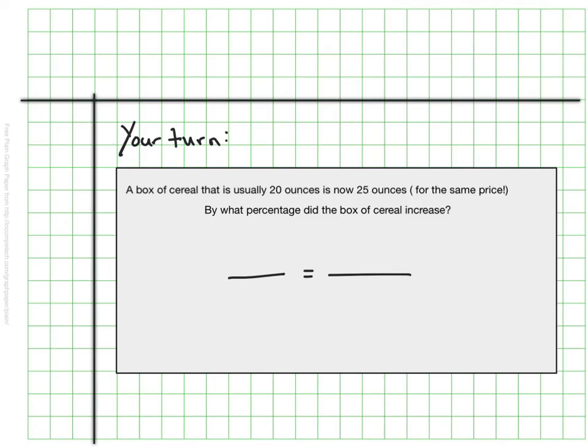This last one, I'll have you try on your own. And it more matches with those images that I shared earlier in the video where a product is being sold with more in it than previously. So this one says a box of cereal that is usually 20 ounces is now 25 ounces. So they've made it a little bit more, but they'll still sell it for the same price, which is great. By what percentage did the box of cereal increase? So what was the percent increase of this box? And so that's the one you'll have to try on your own and be sure that your answer is visible for me when I check your work.